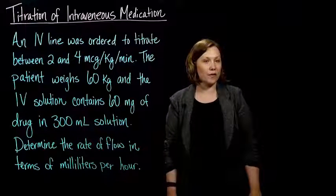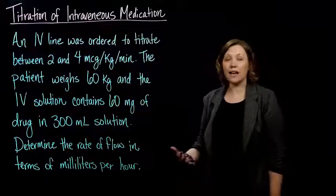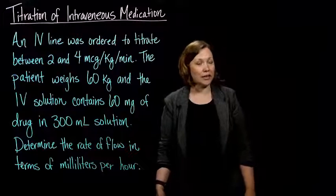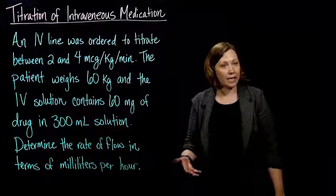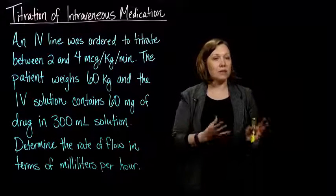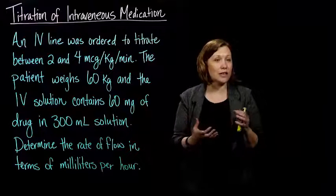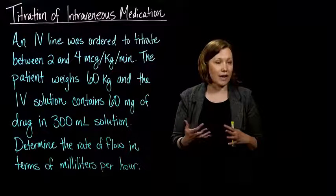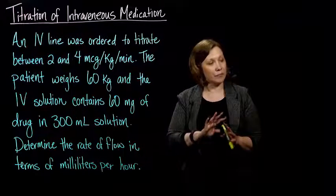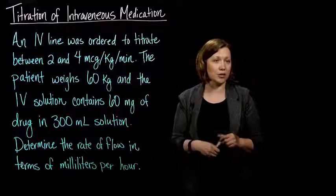Sometimes medications are ordered to fall within a particular range of values, and because of this, a titration will be necessary. In chemistry, a titration is where you take a solution with some unknown concentration and mix it with a solution that has a known concentration very slowly and gradually until a chemical reaction occurs. You then use that information to figure out what the unknown concentration is of your original solution.